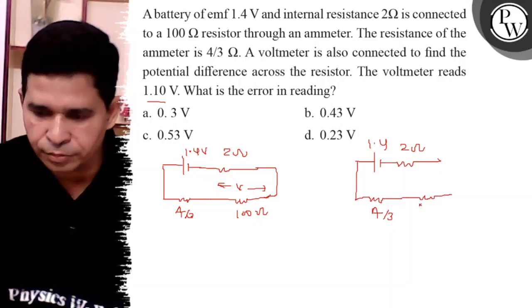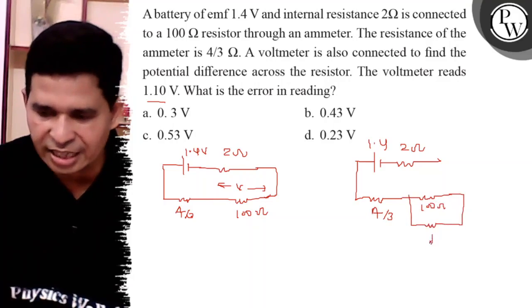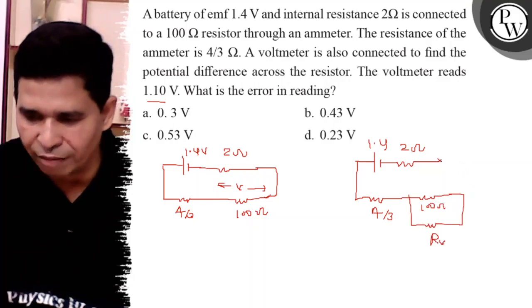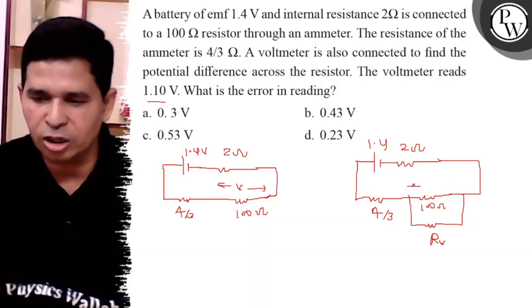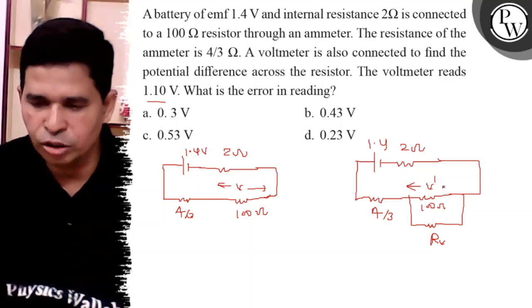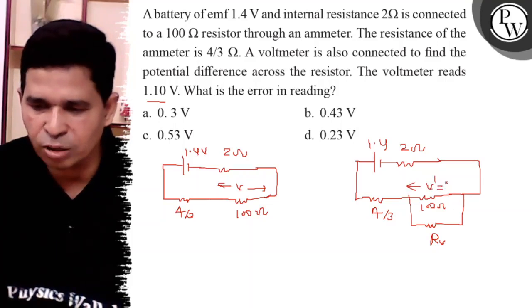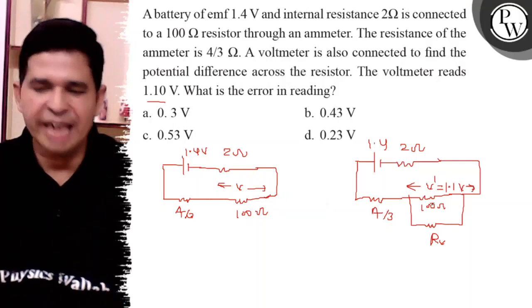The 100 ohm and in parallel the voltmeter is connected—it also has resistance, not infinite resistance. This is the case, and here the drop is V dash. V dash is across these two resistances and V dash equals 1.1 volt. The difference between V and V dash is the error.